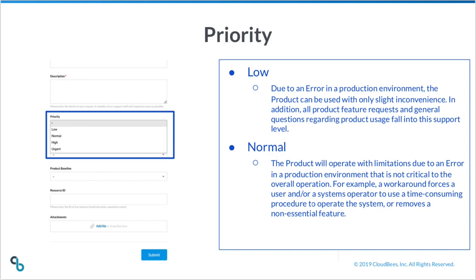Normal priority: the product will operate with limitations due to an error in a production environment that is not critical to overall operation. For example, a workaround forces a user and/or systems admin operator to use a time-consuming procedure to operate the environment, or removes a non-essential feature.